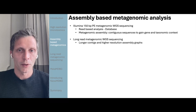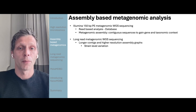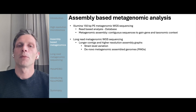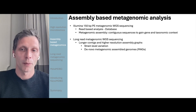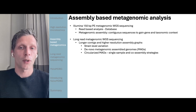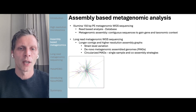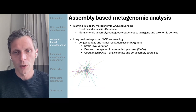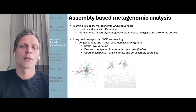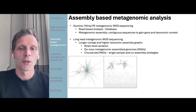When the advent of long read metagenomic sequencing came along, the context got longer, the resolution got higher, and the assembly graphs got better. This is allowing people to start looking at strain-level variation within samples, as well as moving on to de novo assembled metagenomic assembled genomes or MAGs. And then with newer assemblers we're starting to find circularized MAGs from both single sample and co-assembly strategies. So we're trying to move from a highly complex assembly graph of the human gut microbiome from a short read dataset, to something where you can start to see the resolution of metagenome assembled genomes into single circular contigs.